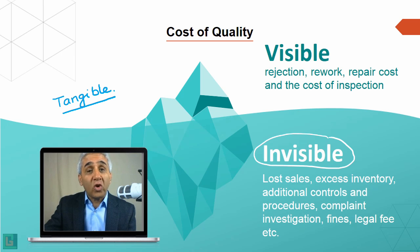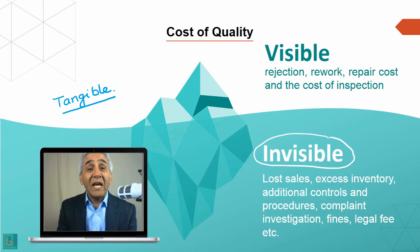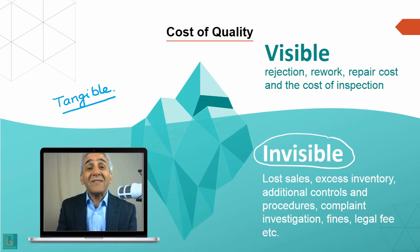The visible cost is something quite obvious. It includes things like rejection — whatever gets rejected has a cost — there is a cost for rework, a cost for repair, and a cost for inspection. All these obvious costs are the tangible or visible costs.